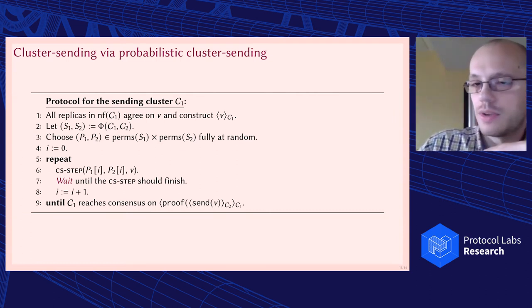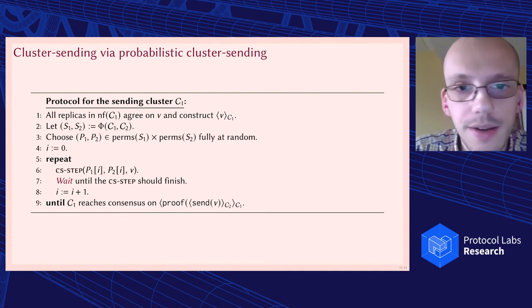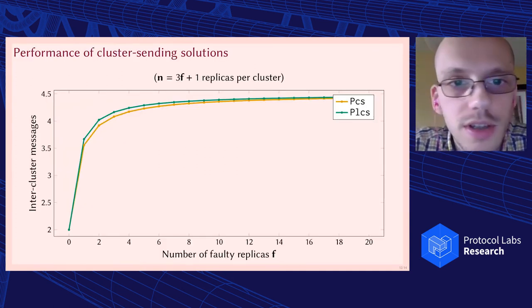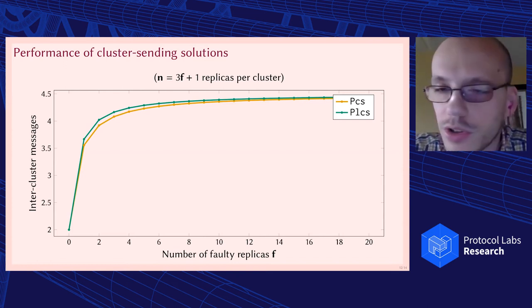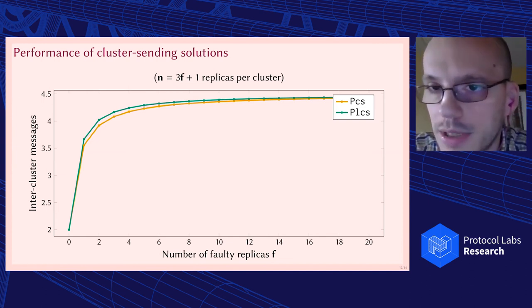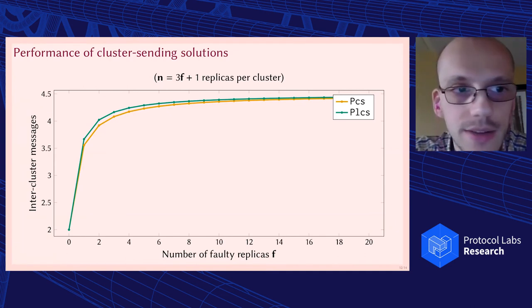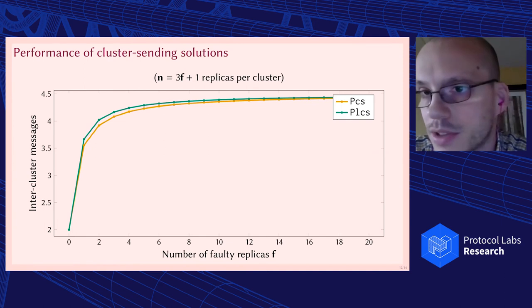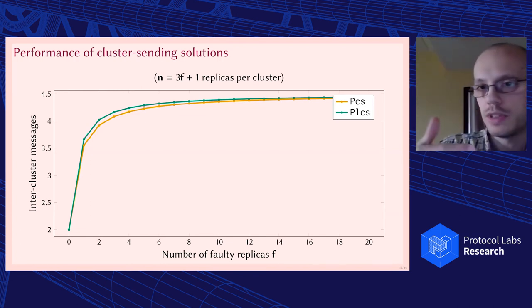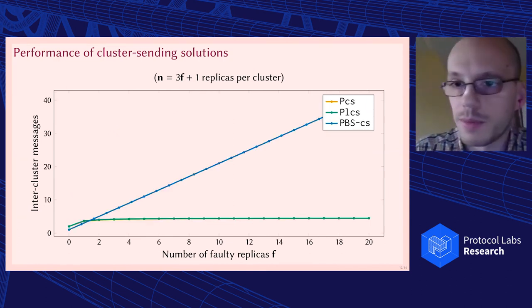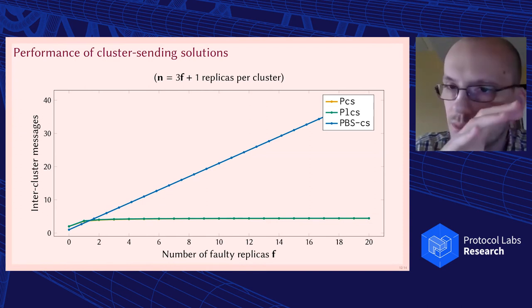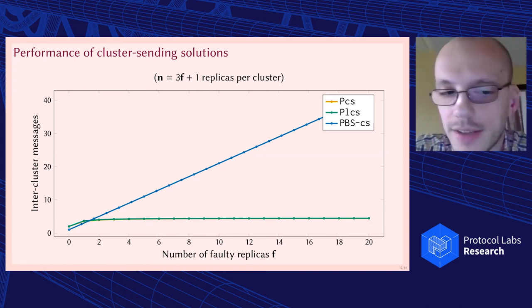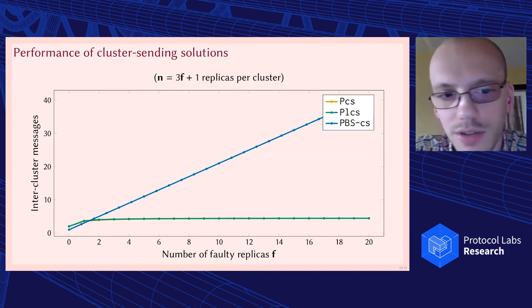So some graphs for performance. In this graph we have the two probabilistic approaches. So the green line is the one that terminates always in linear time, and the orange one is the one that might not terminate because it's completely probabilistic. And as you see they are quite similar. And the best thing is they cap off at around four to five message rounds, which is completely independent of how big your cluster is. If you have thousand replicas in your clusters, it's still going to take five messages between these clusters. So that's really good. And if we add the optimal approach, the optimal approach is going to be linear in the size of the cluster. A very small cluster is going to be slightly faster, but for anything that resembles what we look at nowadays, like clusters with 10 to 20 replicas, it's going to be slower.